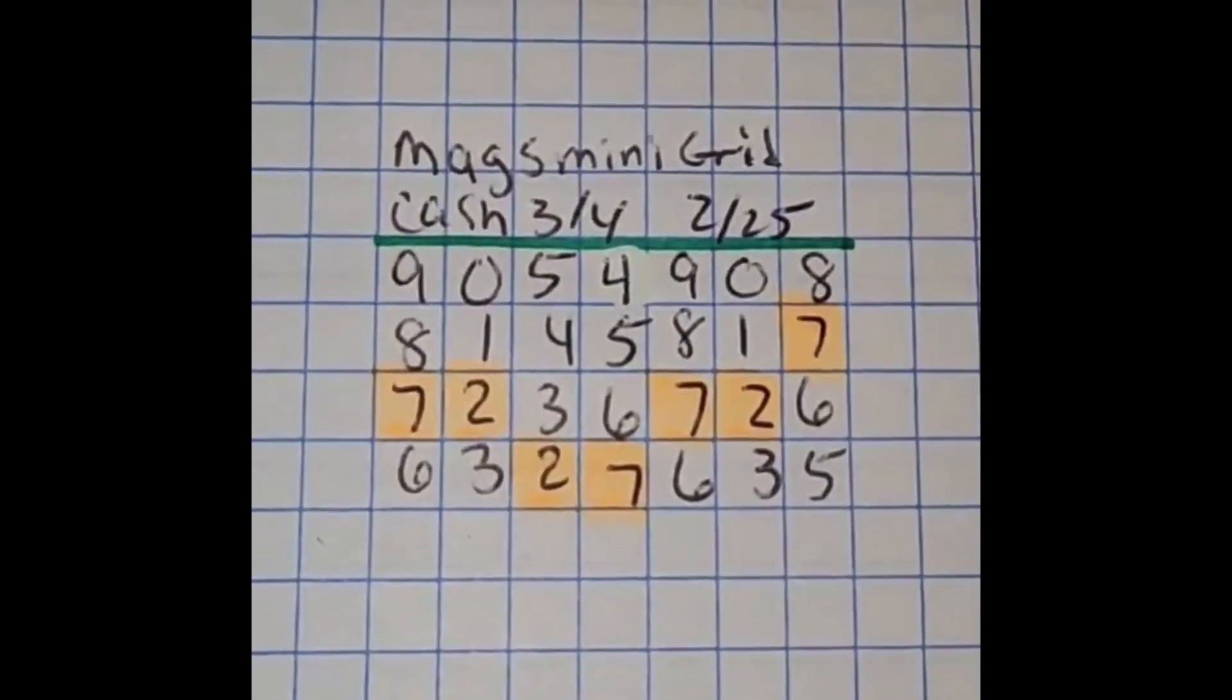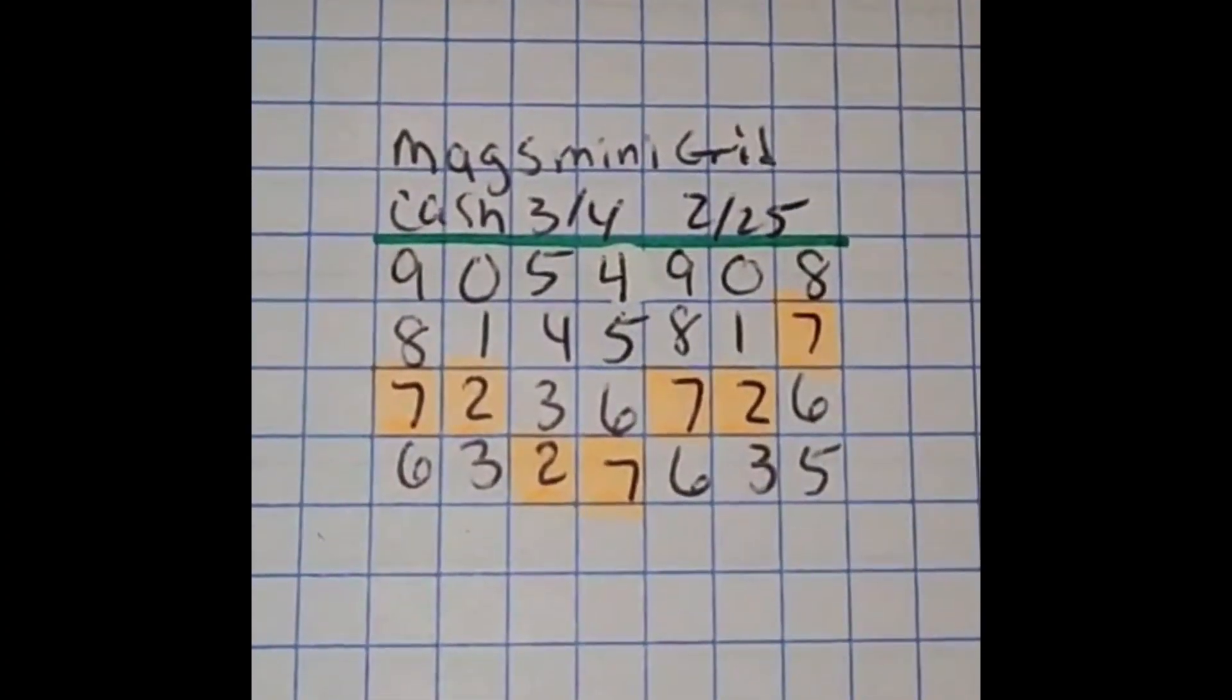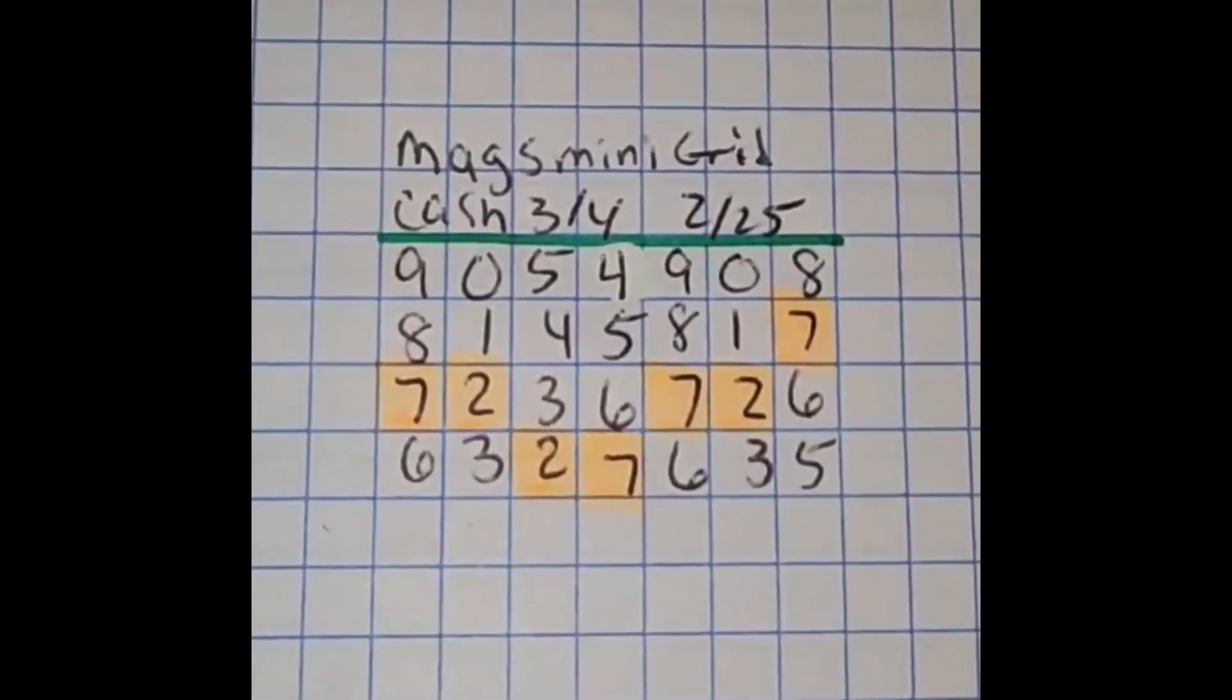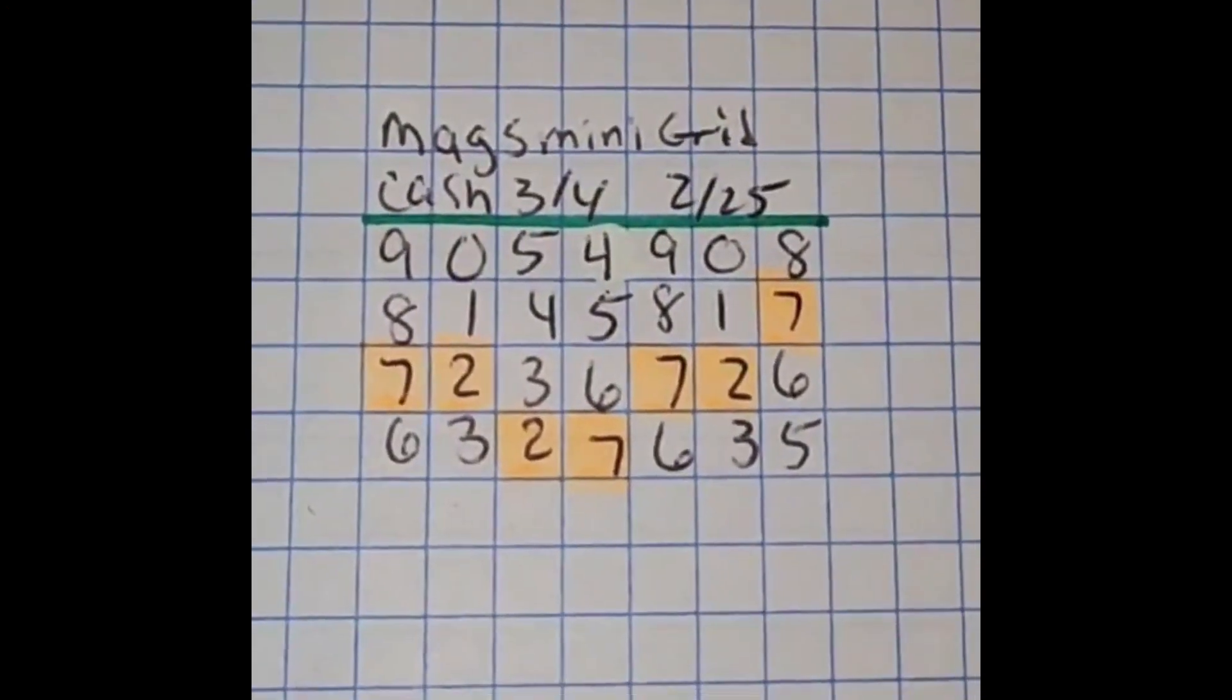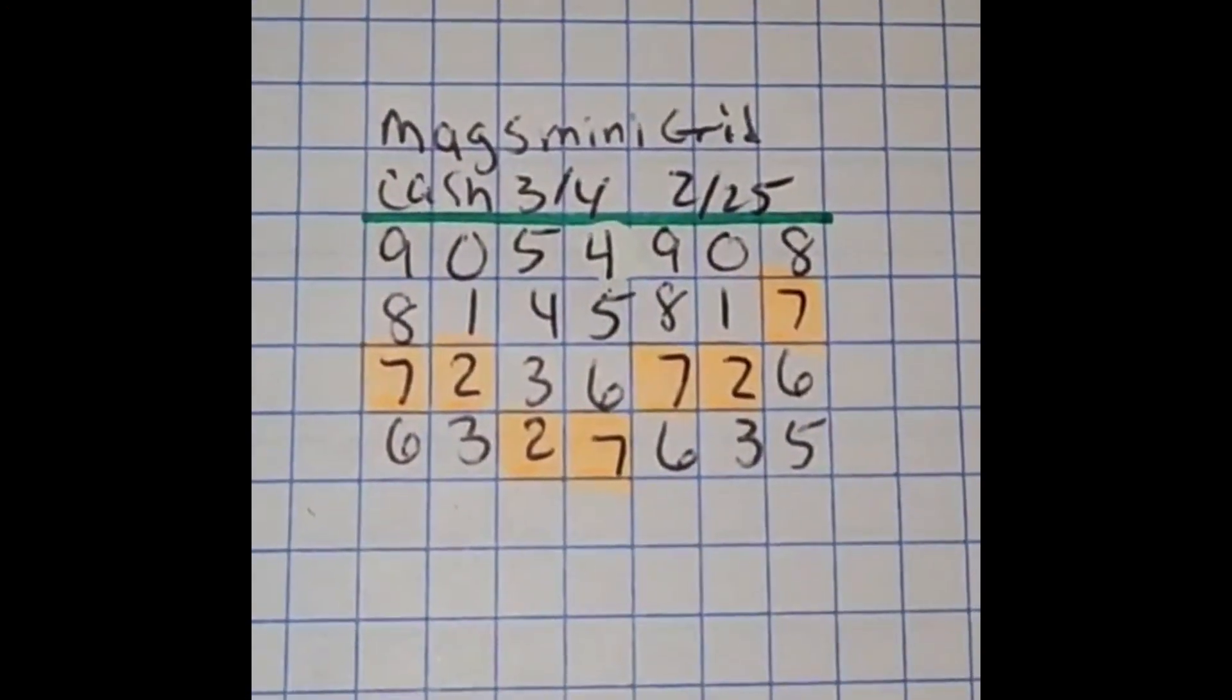Also, be watching for those 7s and 2s. Obviously, those are across the board. We know that there's going to be some hits off of those coming up as we get closer to that 27th date. So be sure to go ahead and start locking in your numbers as soon as possible.